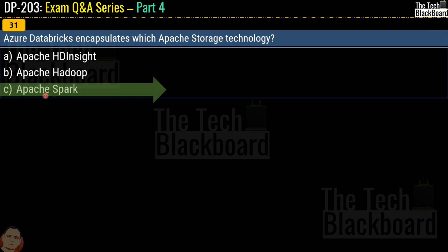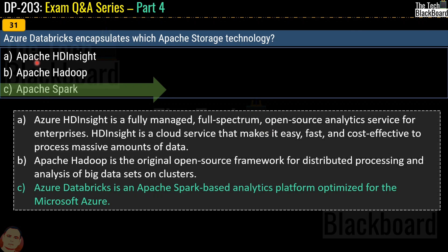Let me give you a bit more information on each option. There is nothing like Apache HDInsight — it is actually Azure HDInsight, which is a fully managed, full-spectrum open source analytics service for enterprises that makes it easy, fast, and cost-effective to process massive amounts of data. Apache Hadoop is the original open source framework for distributed processing and analysis of big data sets on clusters. Apache Spark is the correct answer — Azure Databricks is an Apache Spark-based analytic platform optimized for Microsoft Azure.